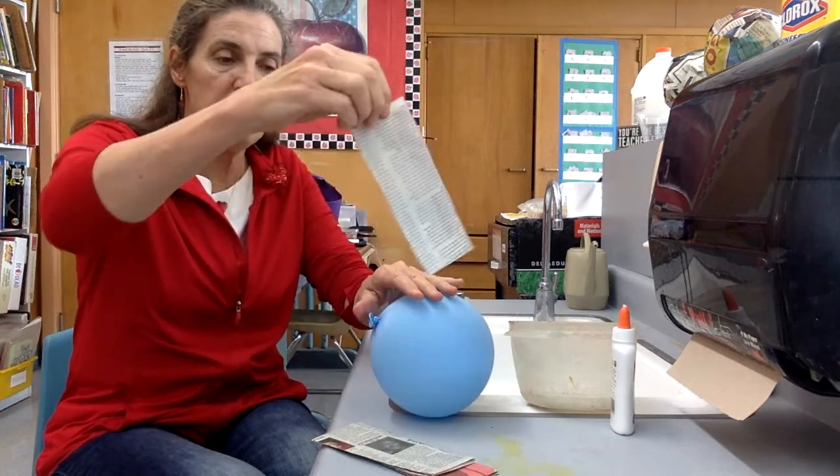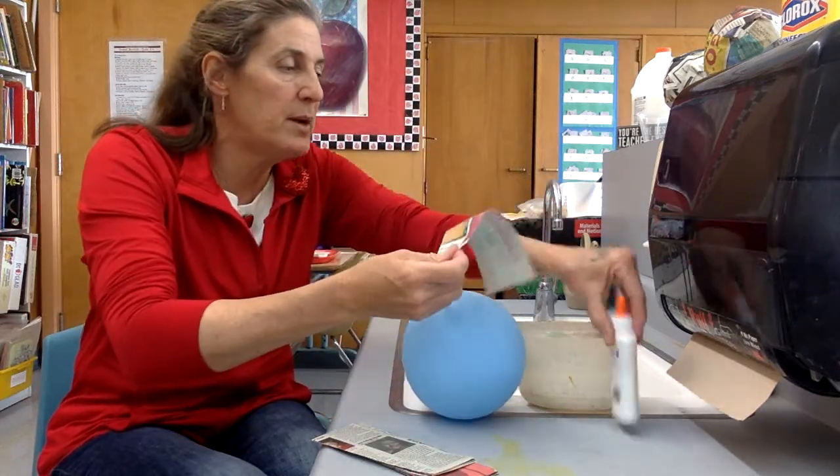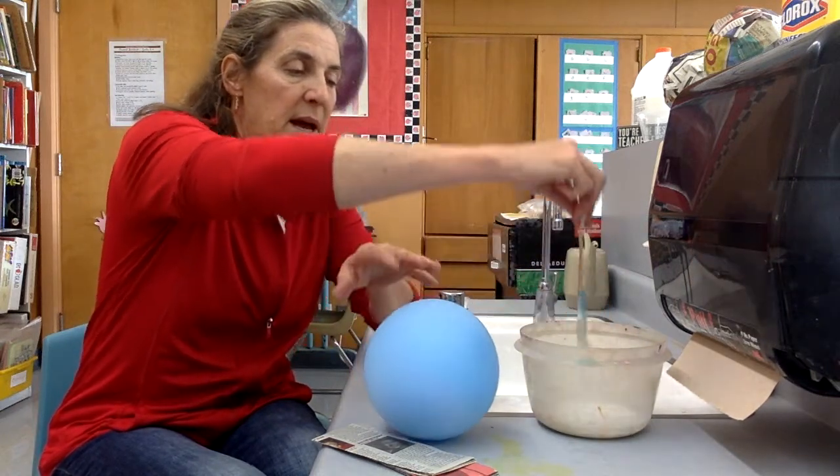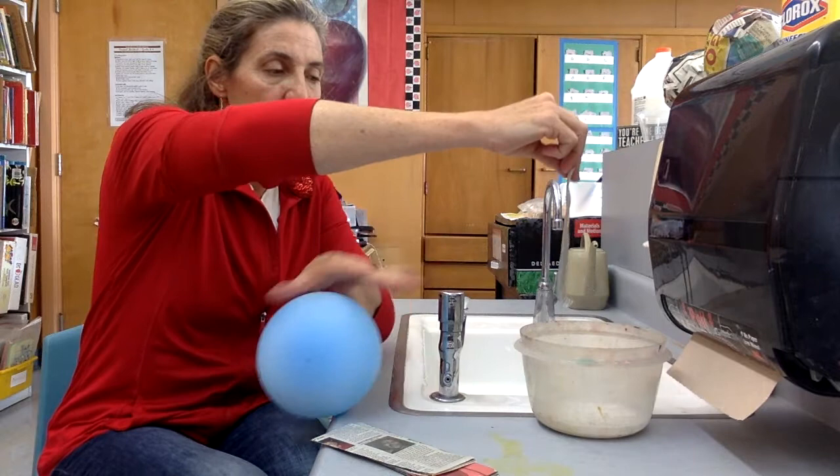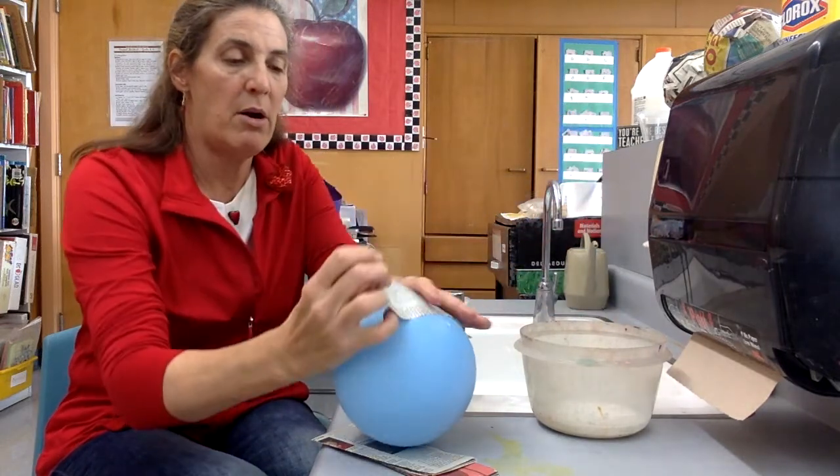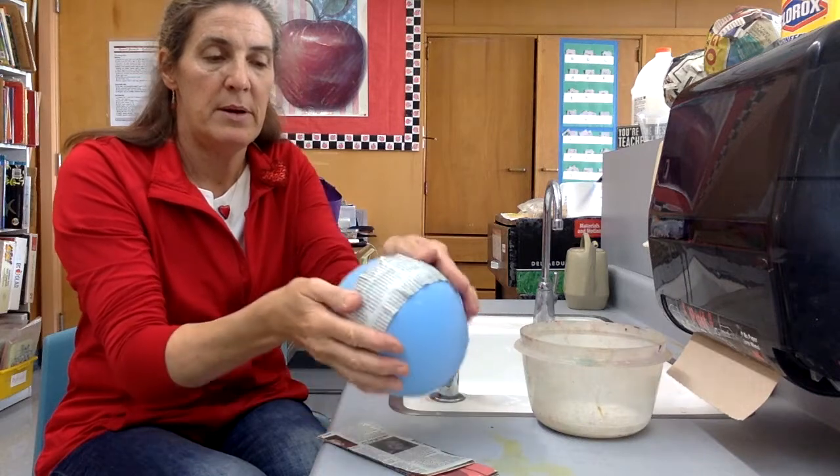I put a strip of paper into that gluey mix, watery glue mix, pick it up. It's dripping a bit. I can scrape it off. I put it on my balloon like that.